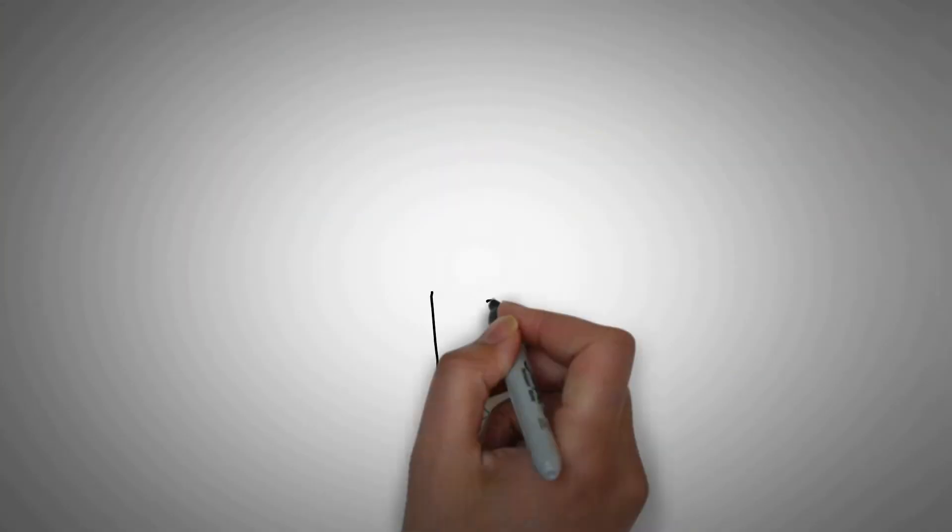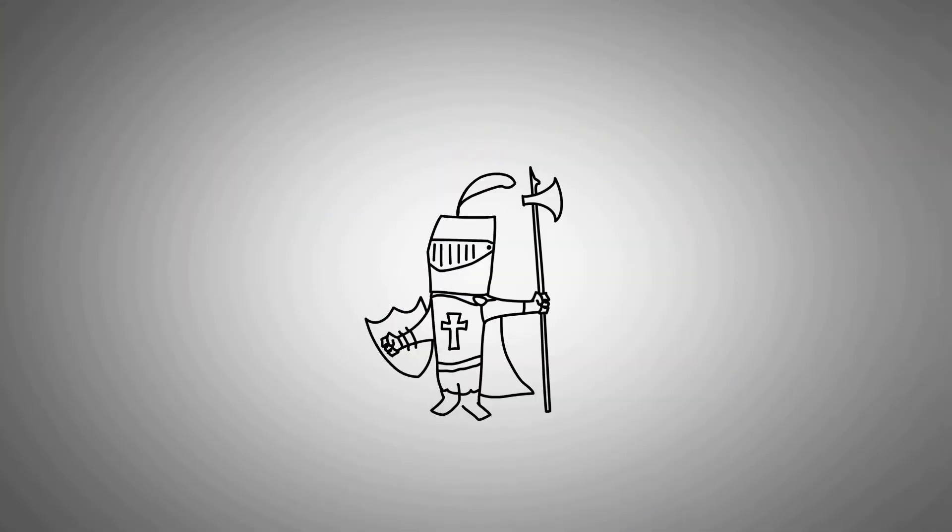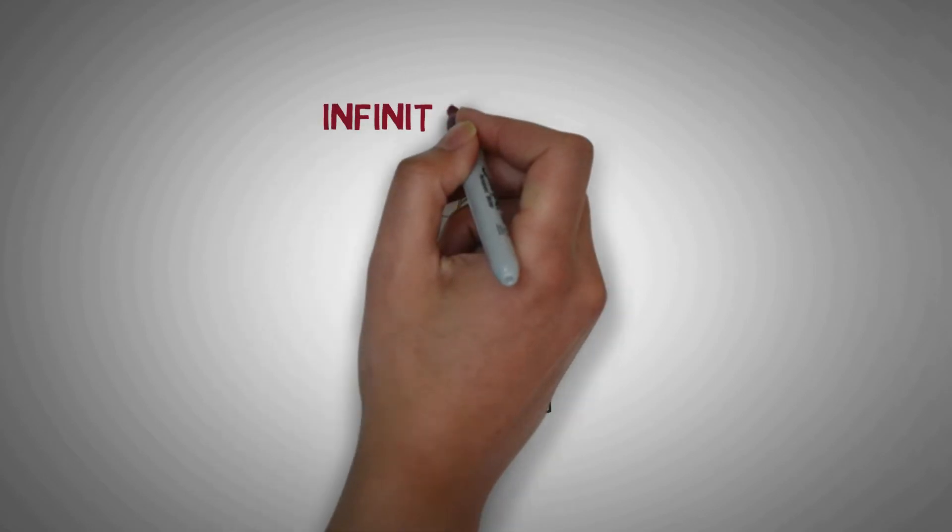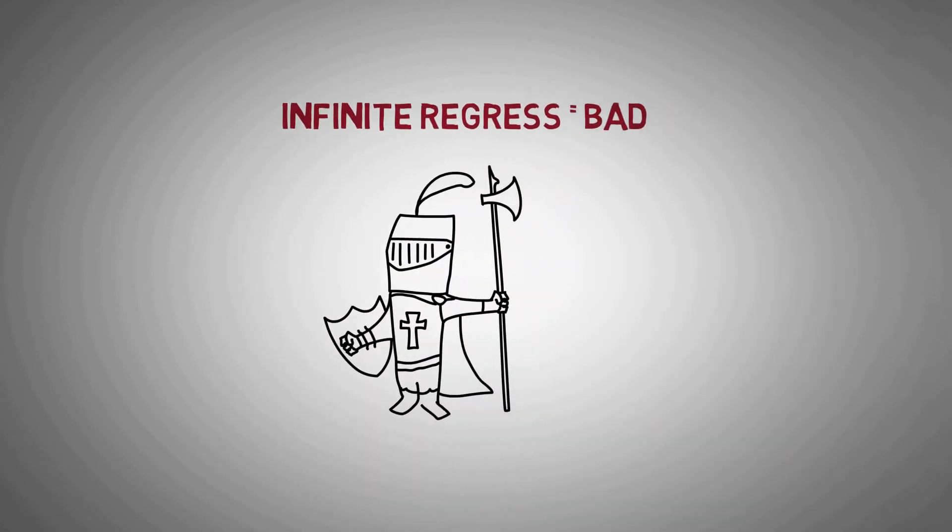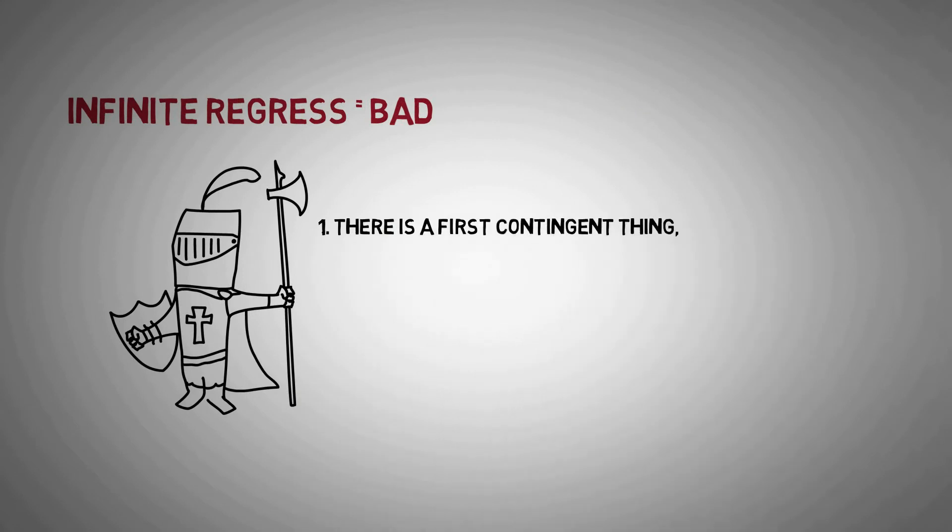In the battle over ideas, people have built many arguments for a necessary foundation that cut against an infinite regress. For example, they argue that there was a first contingent thing that was caused by a necessary first cause.